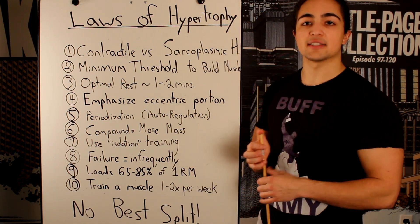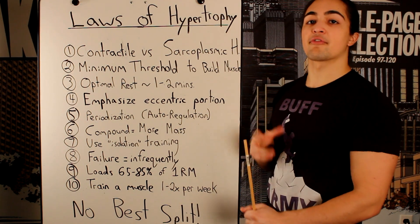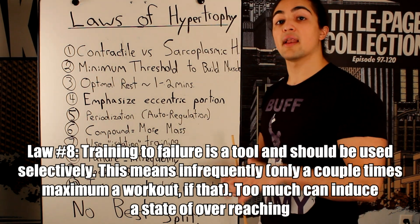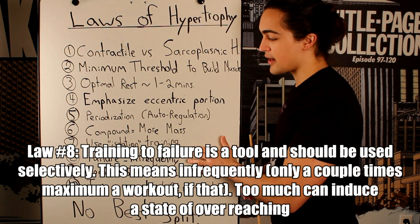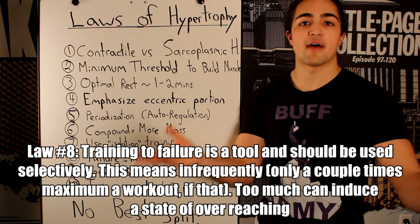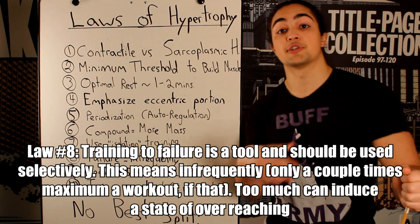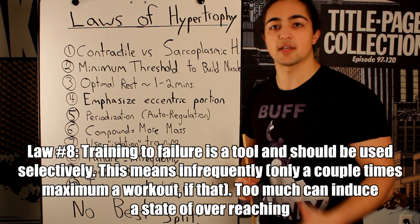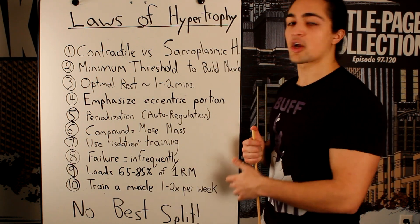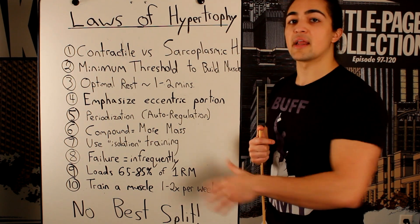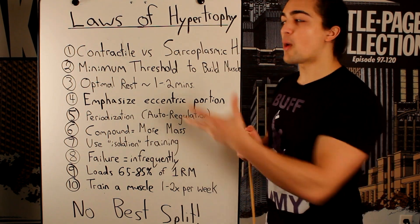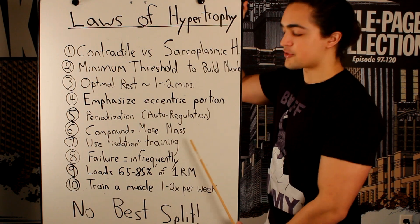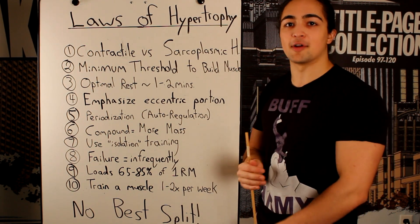Law eight: should you train to failure? The science says you could train to failure, but infrequently. Failure is very stressful on your body and central nervous system — do it too often and you can induce overtraining. In a holistic program where you're training three, four, or five times a week, the more you train, the less often you should train to failure. It's a tool to use, not abuse. I recommend it for isolation movements, perhaps on the last set, only a couple of times throughout the week. This applies to natural training — bodybuilders using steroids may always train to failure, but that doesn't apply to you.